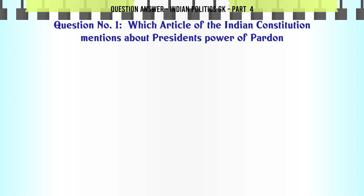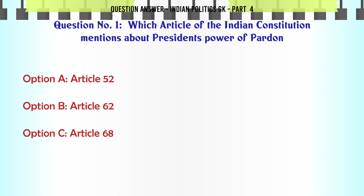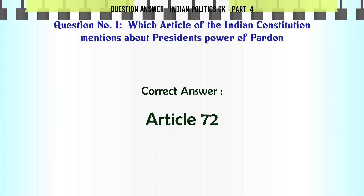Which article of the Indian Constitution mentions about the President's power of pardon? A. Article 52. B. Article 62. C. Article 68. D. Article 72. The correct answer is Article 72.